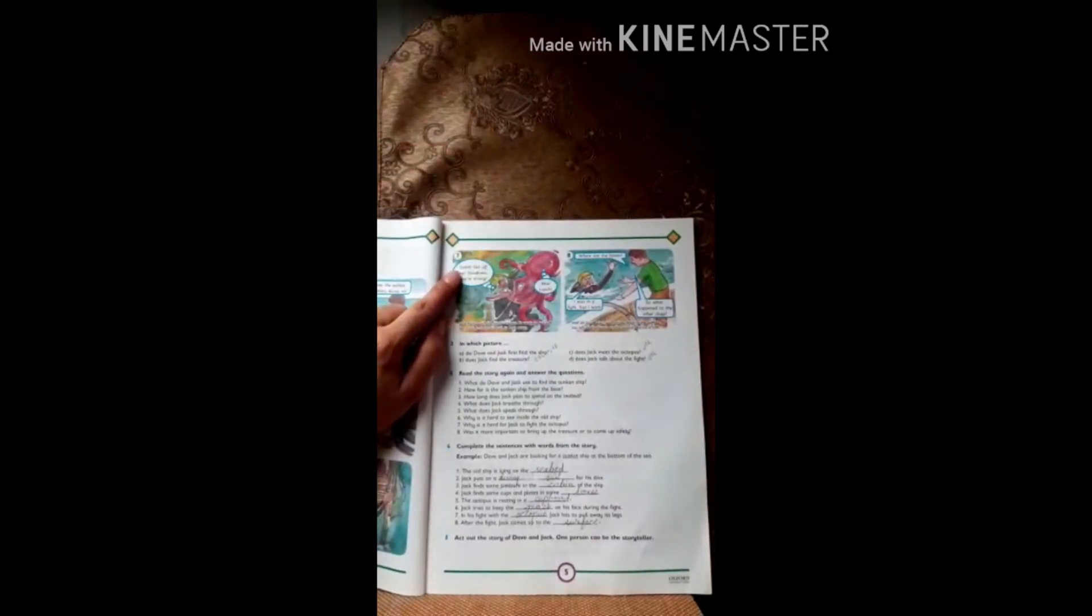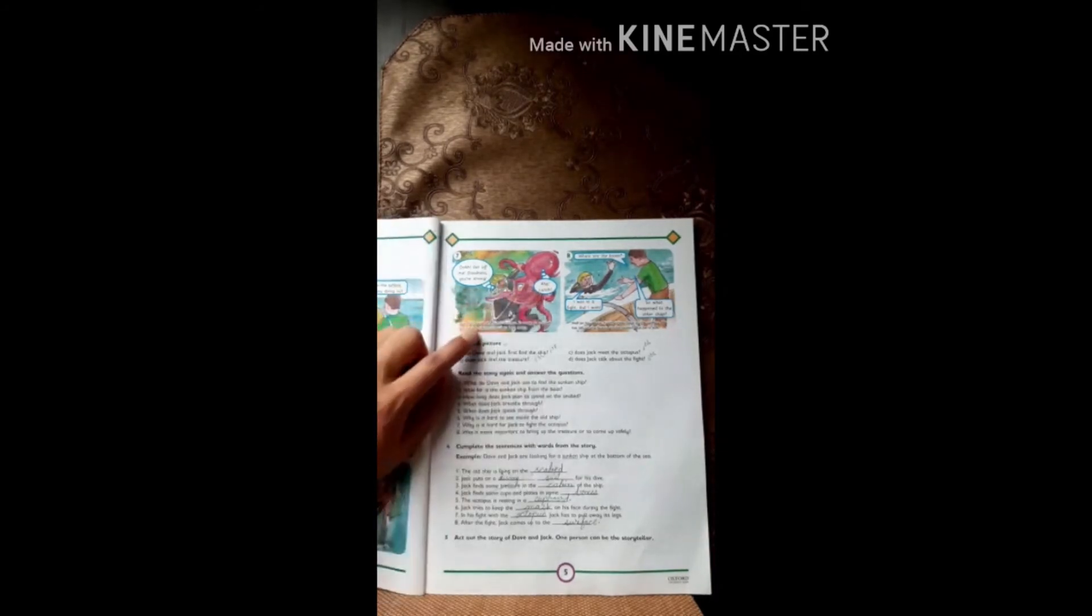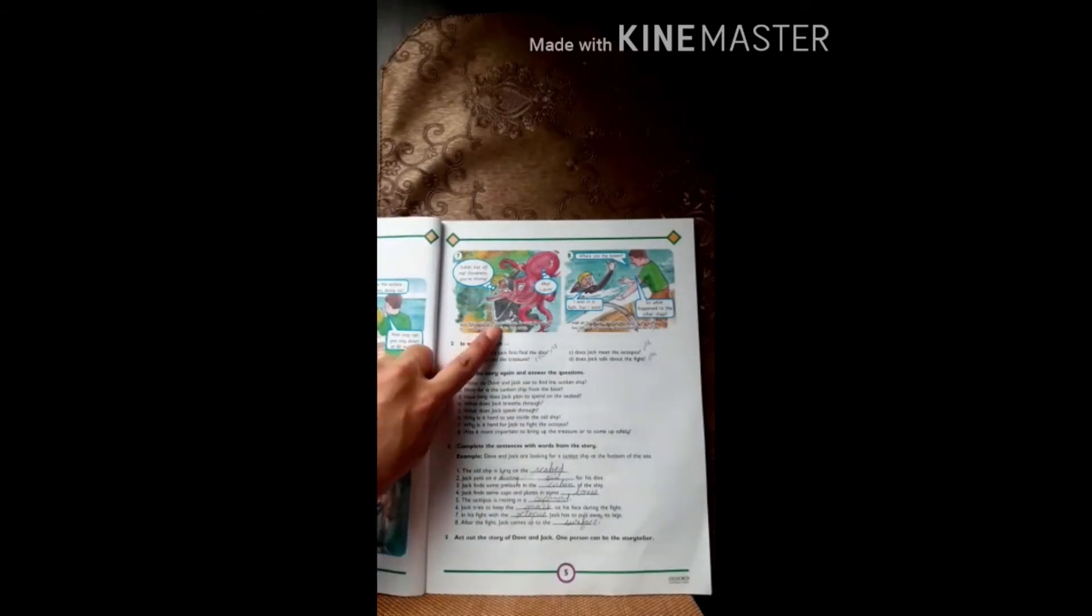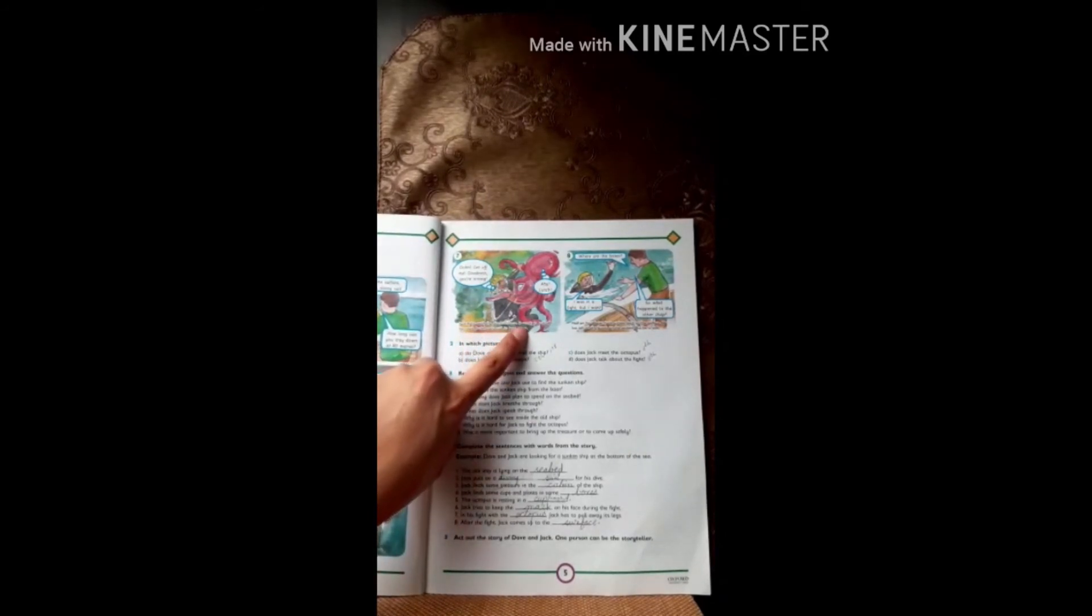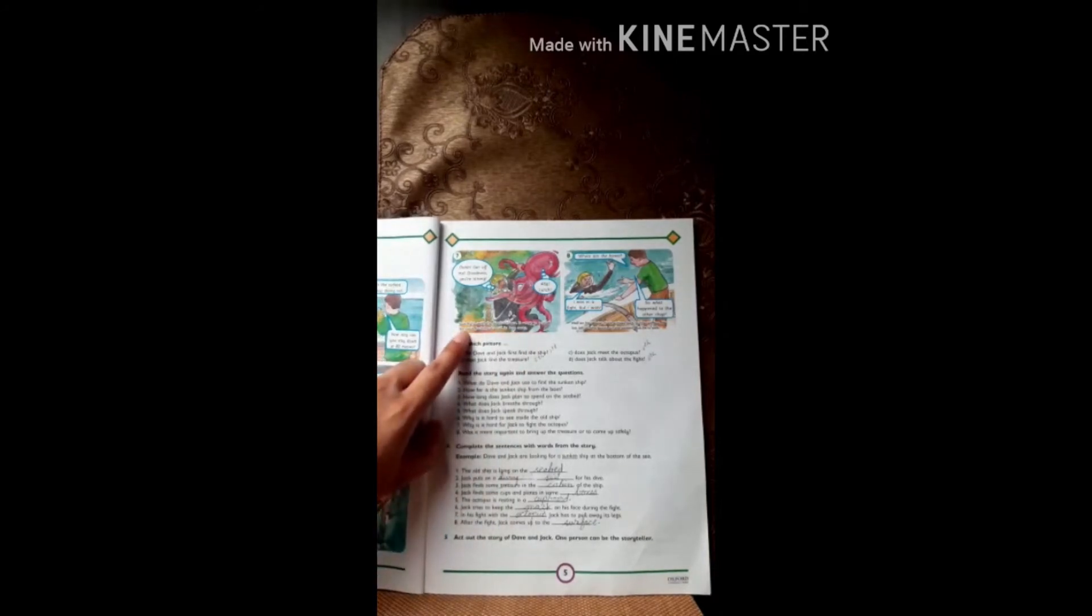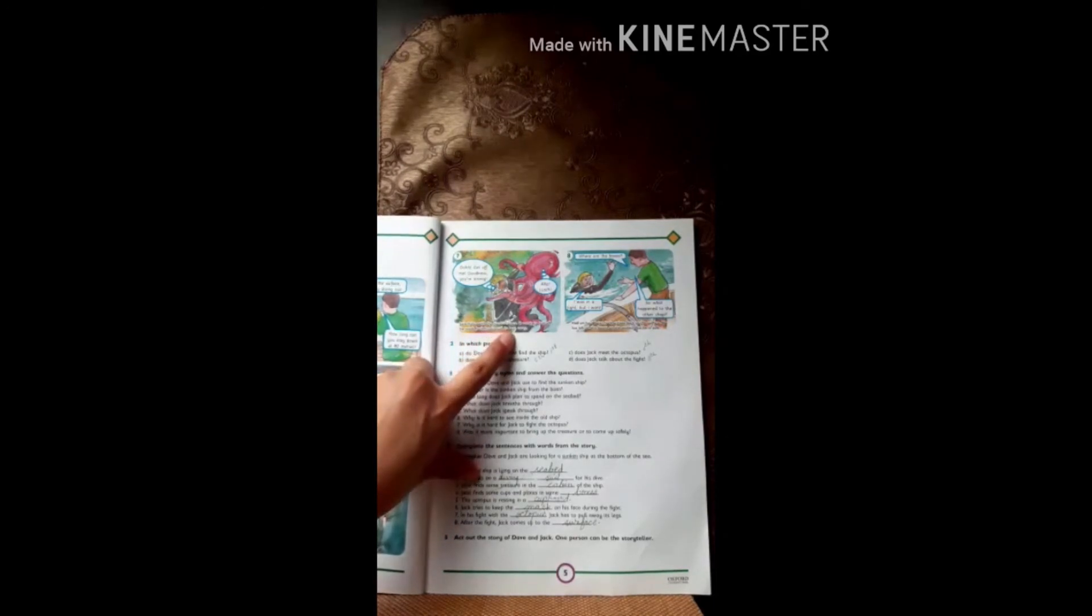Picture number seven. Oh get off me! Goodness you are strong, oh lunch! A big octopus is grabbing Jack from the back side and the octopus is happy, feeling that he got such a good lunch. Jack fights with the giant octopus. It wants to pull off his mask. Jack has to pull its legs away.